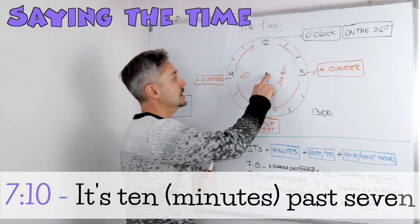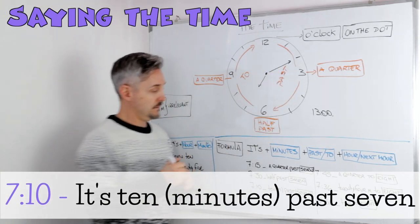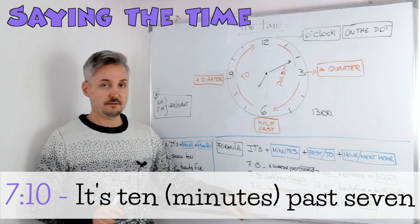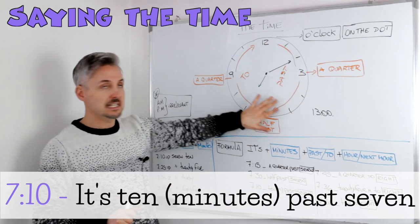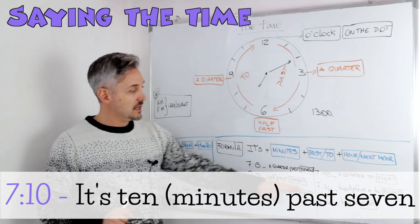Another example: 10, it's 10 past 7, is 10 past 7. So this is easy. This is on this side. Now let's look at the other side.